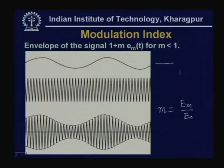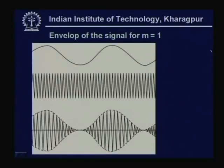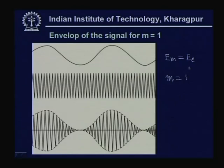This kind of waveform is obtained when M is less than 1, meaning the amplitude of the modulating signal is less than the maximum amplitude of the carrier. As you increase the modulation index — by increasing E_m to equal E_c — the value of M becomes 1. In this case the minimum amplitude is 0 and maximum is 2E_c, giving the maximum permissible modulation.